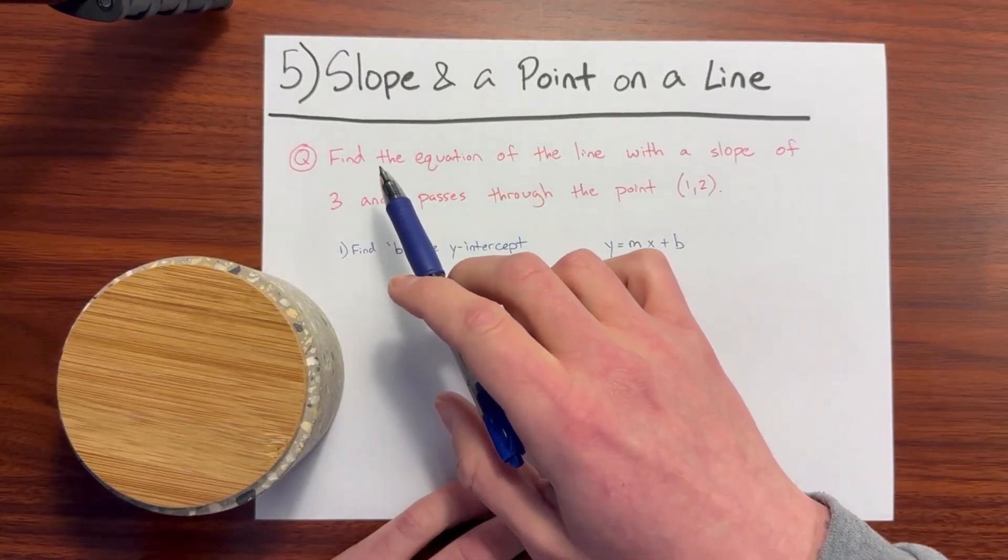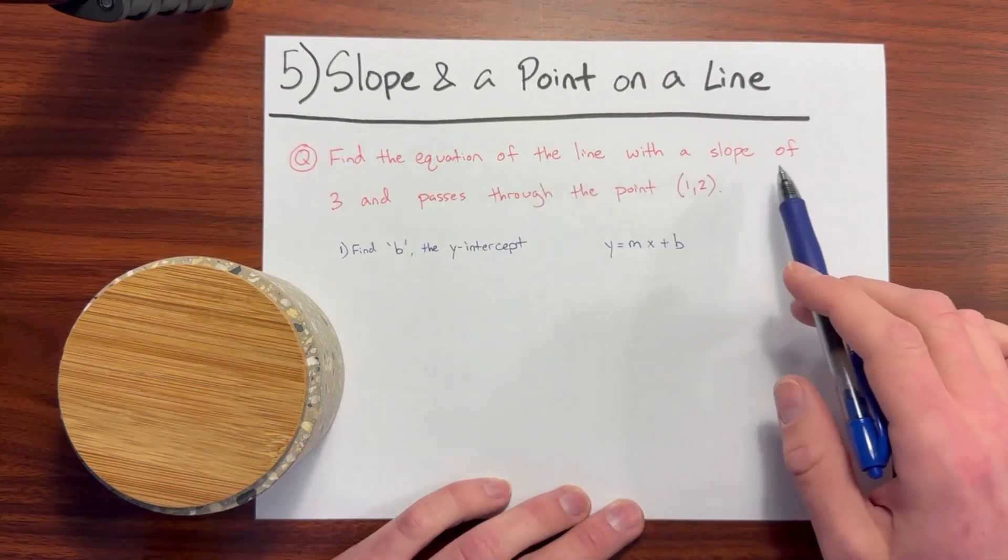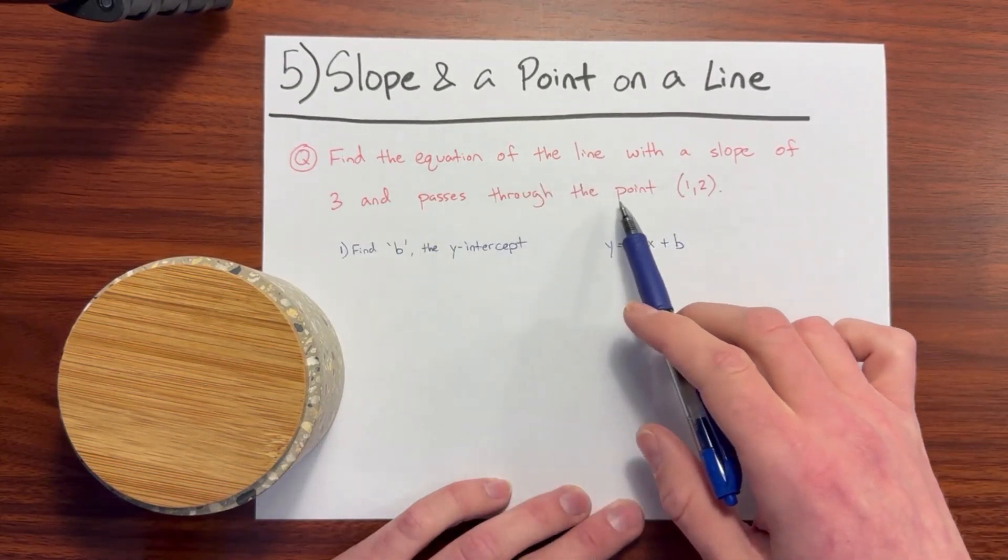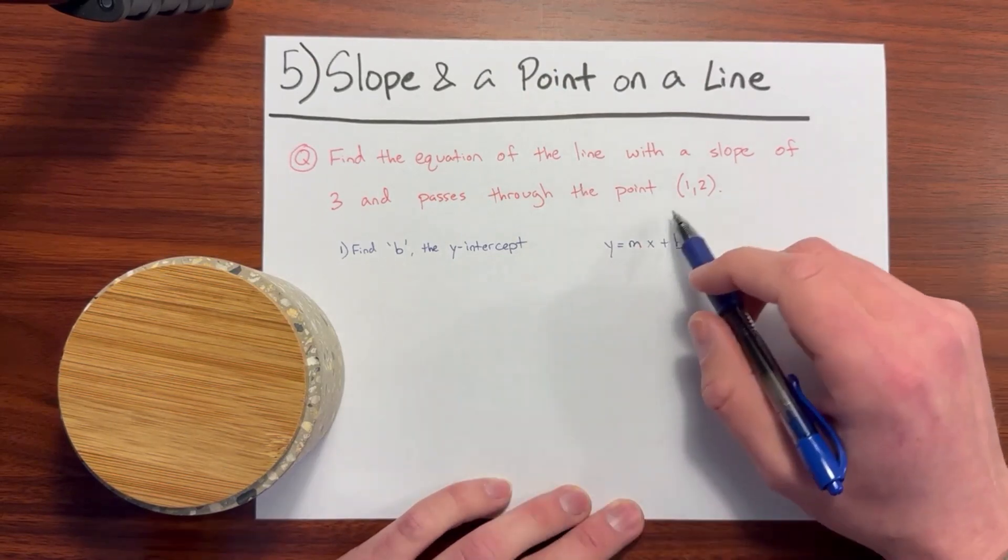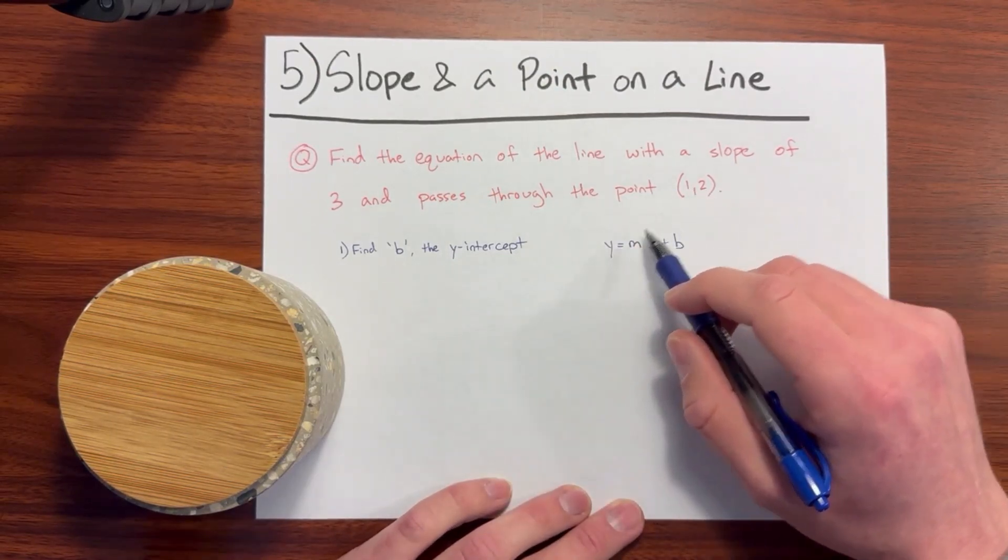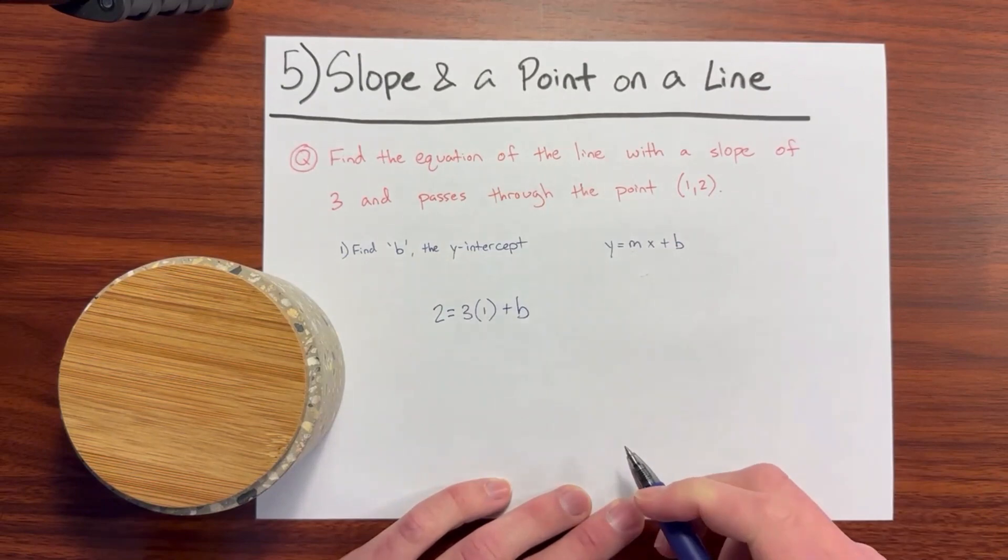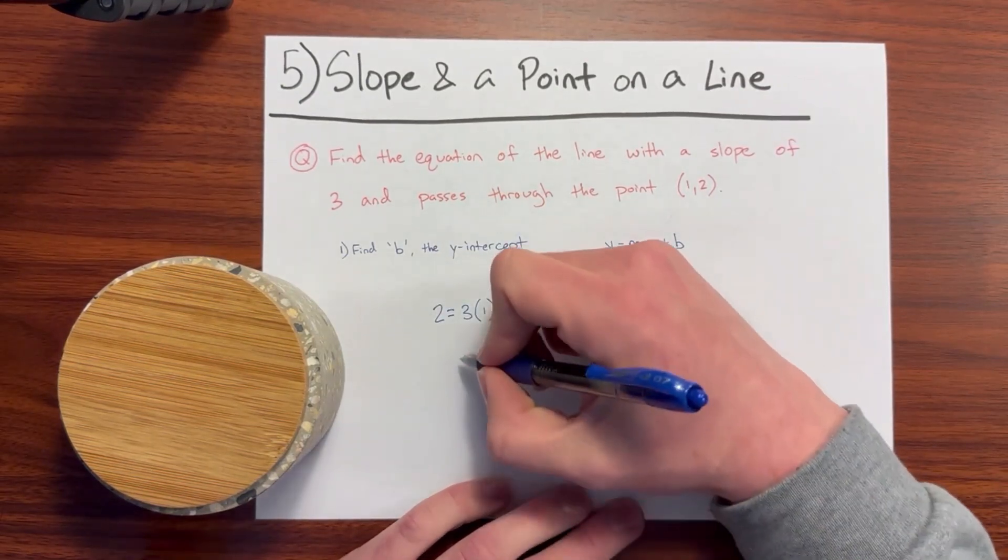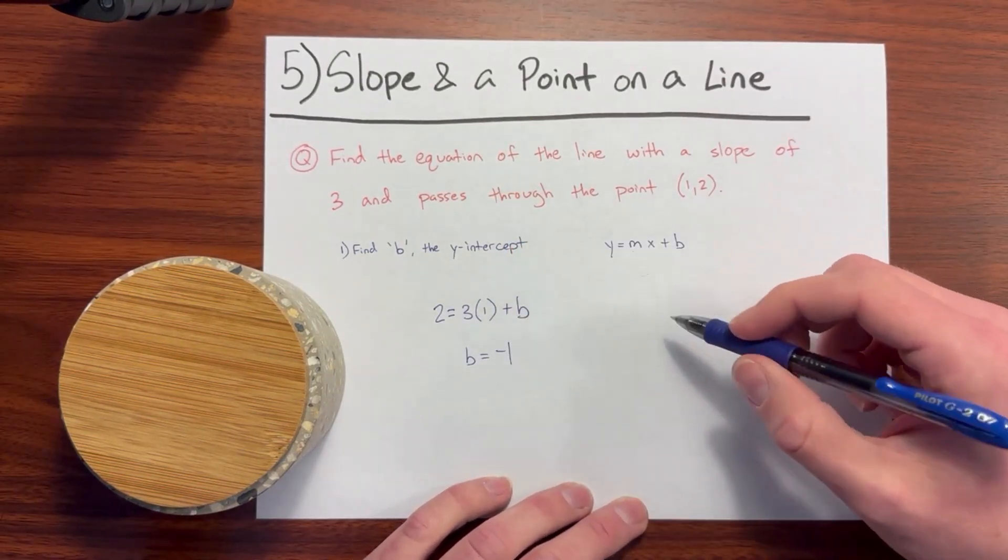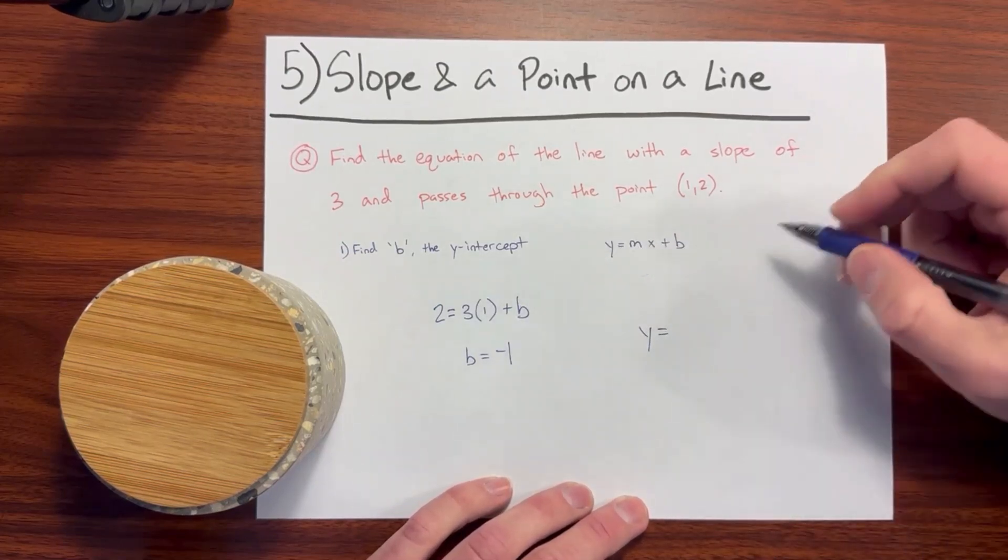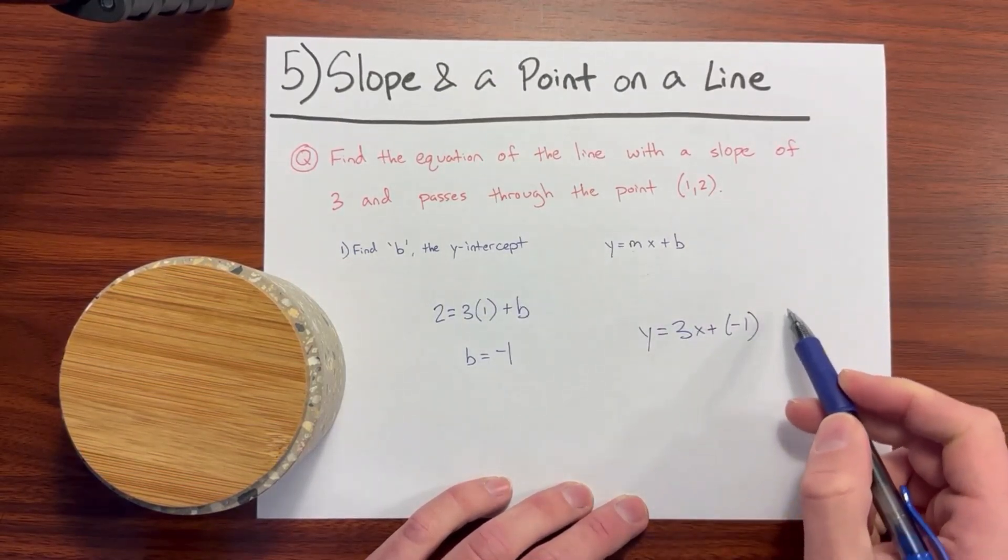Number 5: Determine the equation of a line when given the slope and a point on the line. A question could ask, find the equation of the line with a slope of 3 and passes through the point 1, 2. You'll need to find b, the y-intercept, or in other words isolate b. We'll go ahead and put down the 2 for y and 1 for x and 3 for m. Now that we have those in place, we'll simply isolate b. We know now that the y-intercept b is a negative 1. Then we simply will put everything together here. We know that the slope is 3x plus negative 1. That'll be your final answer.